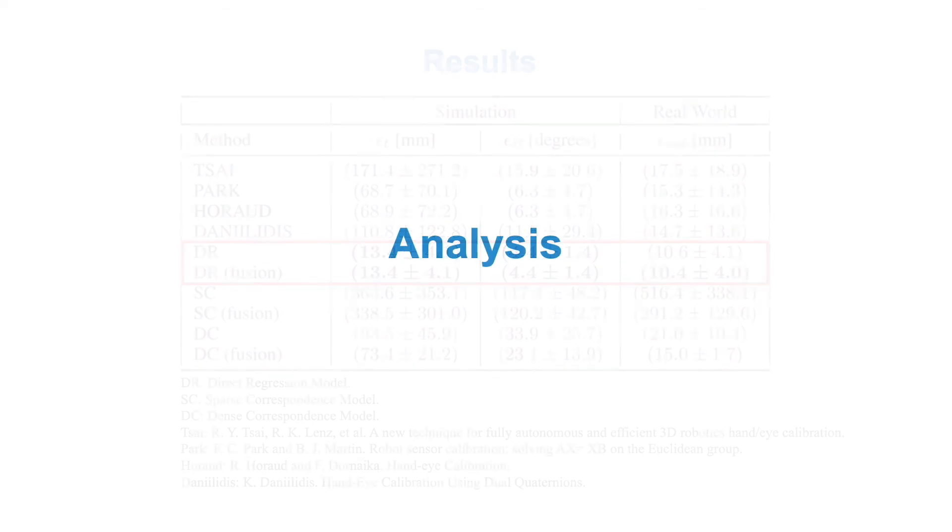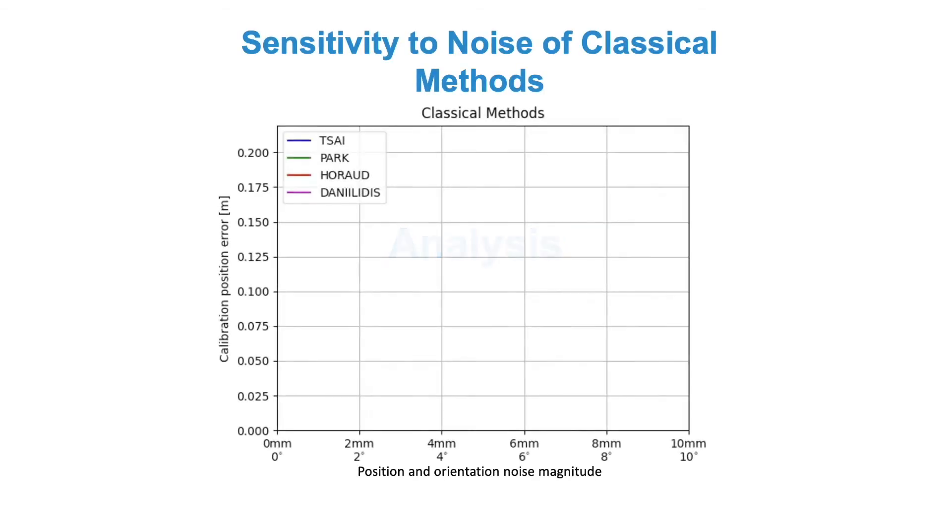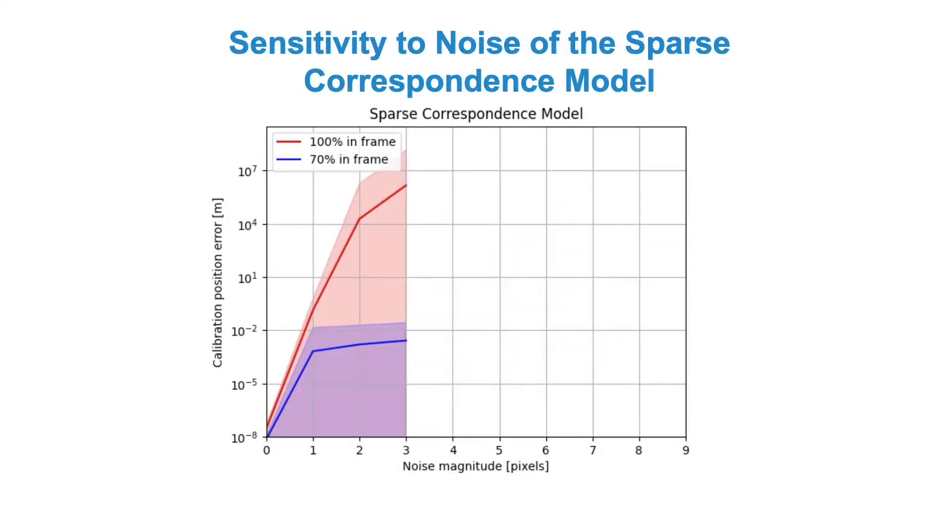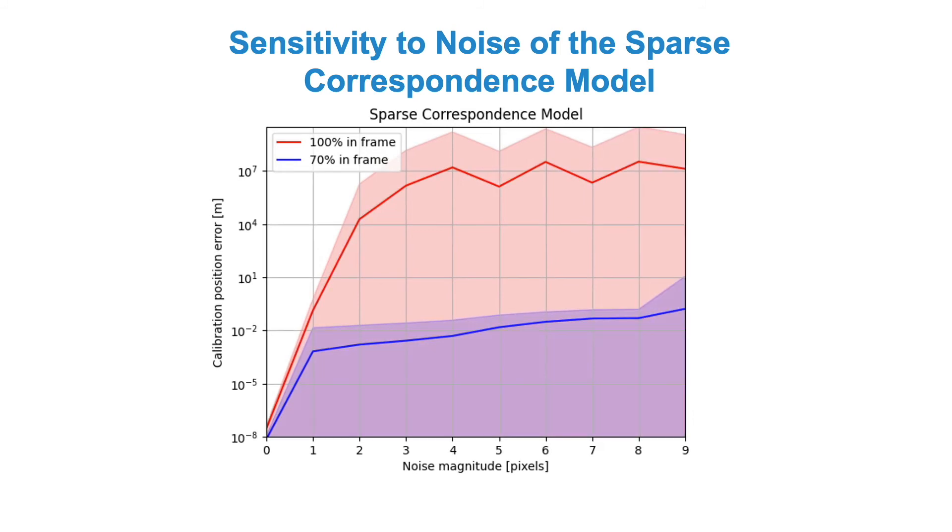To better understand this result, we perform a series of analysis experiments and investigate the sensitivity of different methods to control noise. For the classical methods, we observe a high sensitivity of calibration error to noise in the poses of the calibration object. Similarly, for the sparse correspondence model, we notice that very small amounts of noise in the position of the predicted key points result in large errors in the final calibration.